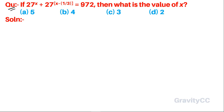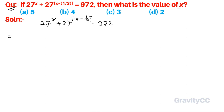Question: if 27 to the power x plus 27 to the power x minus 1 upon 3 equals 972, then what is the value of x? So in this question, given that 27 to the power x plus 27 to the power x minus 1 upon 3 is equal to 972.